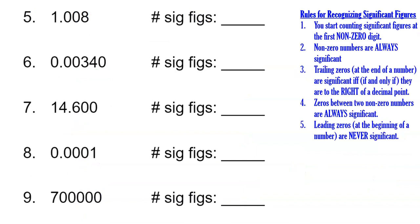Number five has zeros sandwiched between non-zero numbers again, bringing us to rule four — they are always significant. We start counting at the first non-zero number, which is the one, and count: one, two, three, four significant figures.